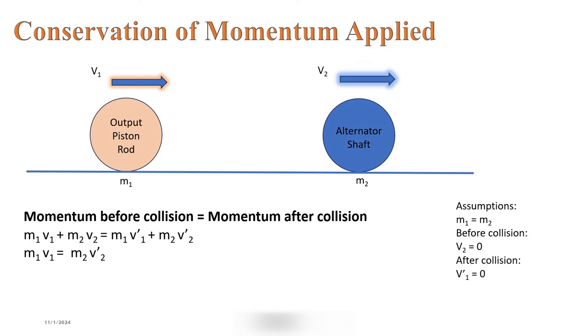For the first iteration, assuming that the mass of the output piston rod and the mass of the alternator shaft is equal, the alternator shaft can be spun with the same velocity of the vehicle upon impact.